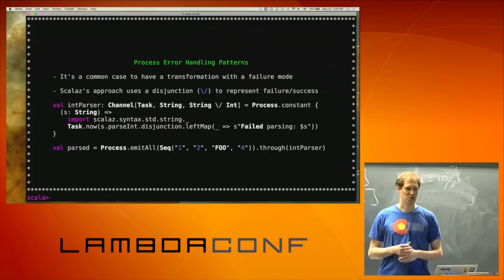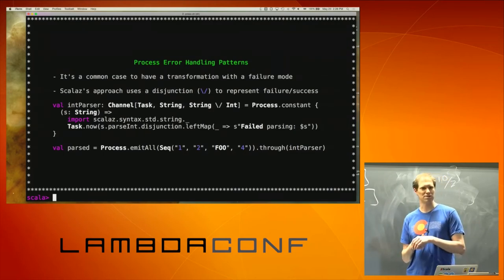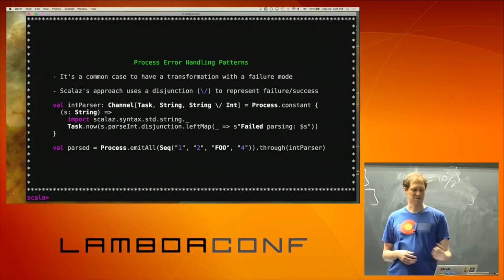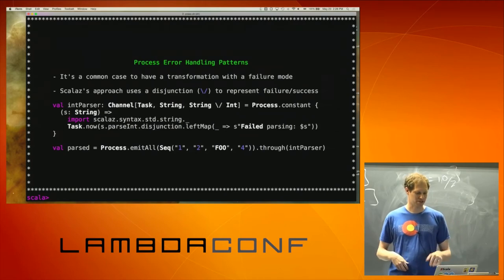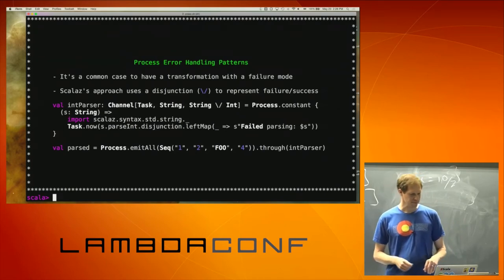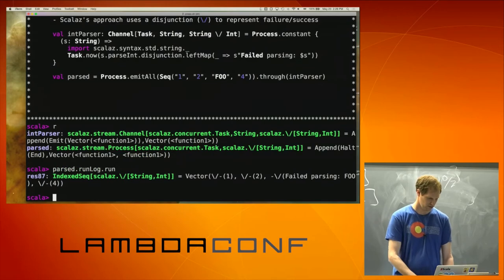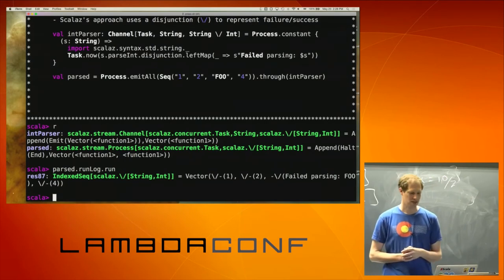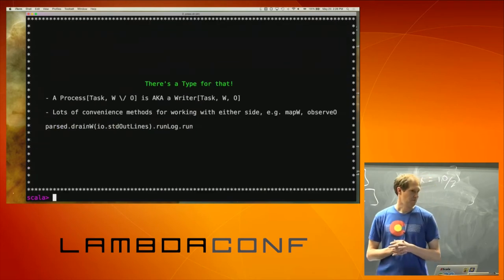On a per-element basis, it's very typical to use disjunctions. Here I've taken a whole bunch of strings and I'm going to try and parse integers from them. I'm actually going to get Validations out of this because parseInt is a Validation implicit. I left-map the actual error to a String, and when I get this — going ahead and running runLog — I get a whole bunch of Lefts and Rights: three Rights for the successful parses and a Left for the one that failed because foo is not a number.